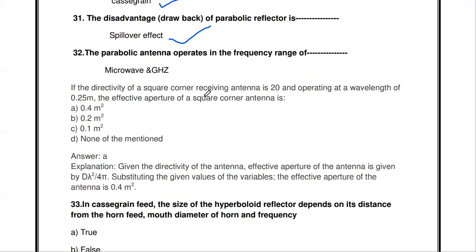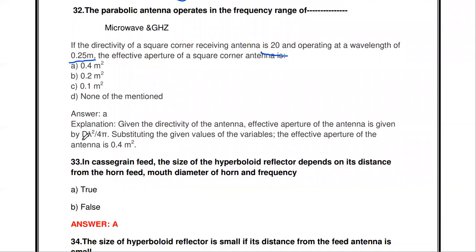If the directivity of the square corner receiving antenna is 20 and operating at a wavelength of 0.25 meters, the effective aperture of the square corner antenna is calculated using the formula: effective aperture = lambda^2 / (4*pi) * directivity. Substituting directivity = 20 and lambda = 0.25, we get the answer of 0.4 square meters.